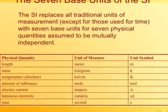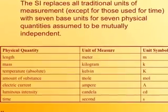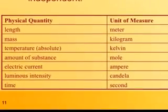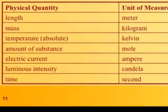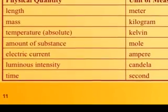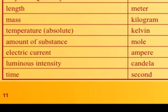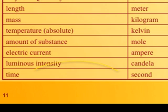Luminous intensity — how bright something is, how much light is falling on a surface — is called the candela, labeled as cd. And of course we have time, which is measured in seconds.